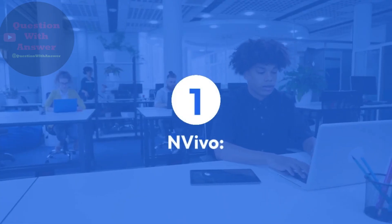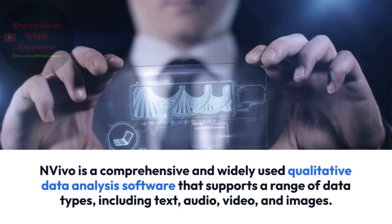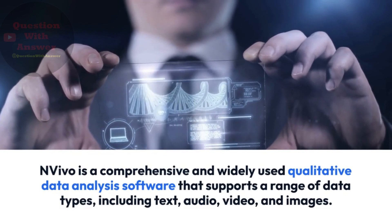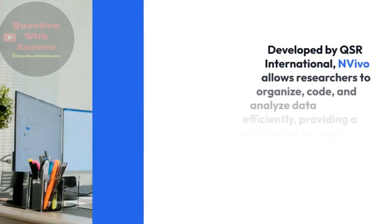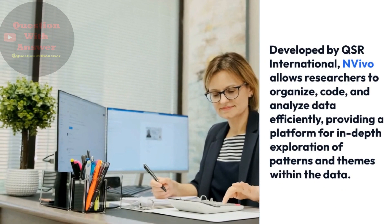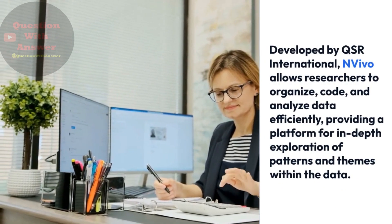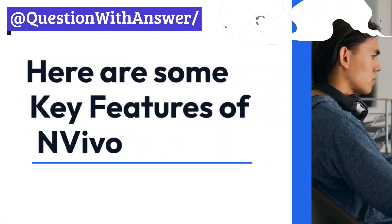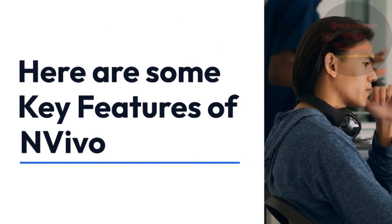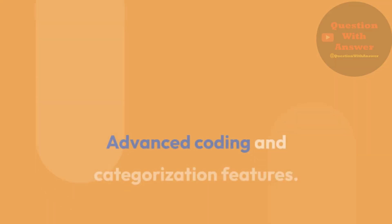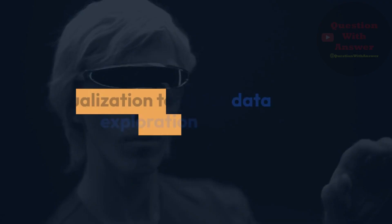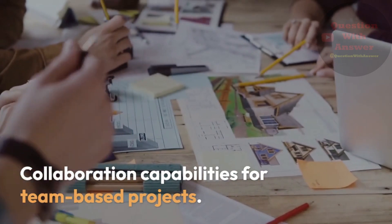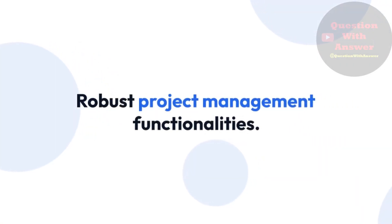1. NVivo. NVivo is a comprehensive and widely used qualitative data analysis software that supports a range of data types, including text, audio, video, and images. Developed by QSR International, NVivo allows researchers to organize, code, and analyze data efficiently, providing a platform for in-depth exploration of patterns and themes within the data. Key features include: multi-format data import and analysis, advanced coding and categorization features, visualization tools for data exploration, collaboration capabilities for team-based projects, and robust project management functionalities.